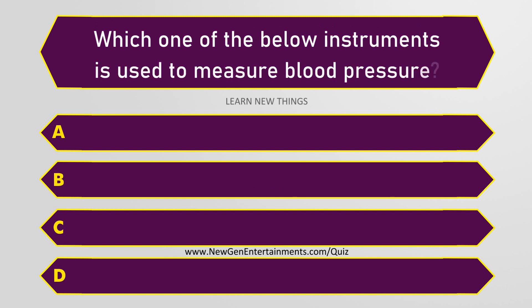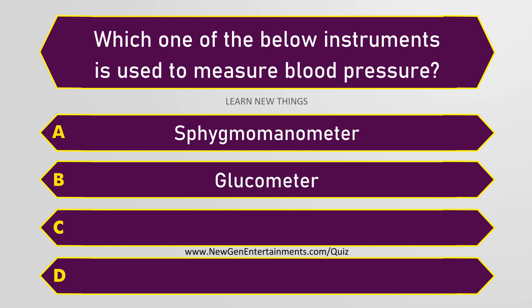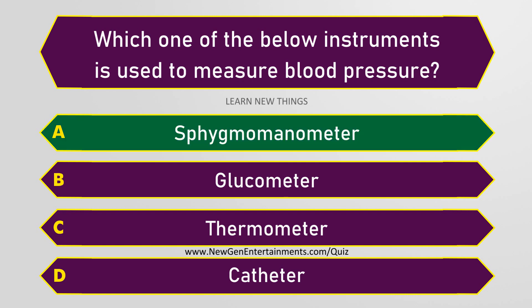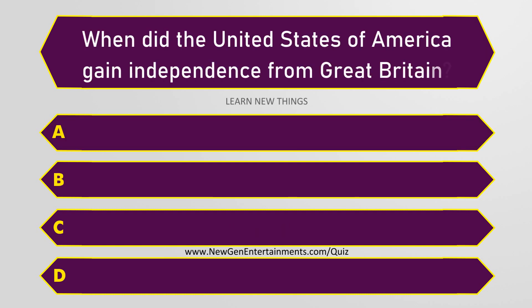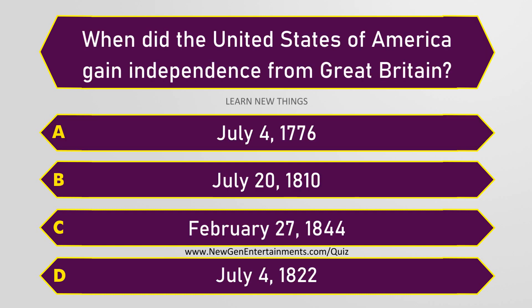Which one of the below instruments is used to measure blood pressure? Sphygmomanometer. When did the United States of America gain independence from Great Britain? July 4, 1776.